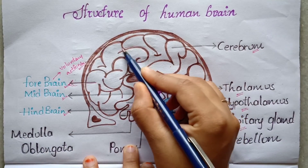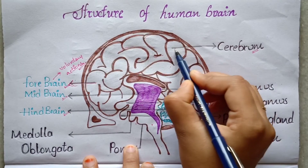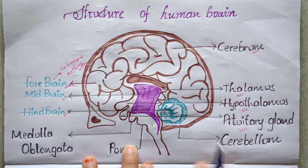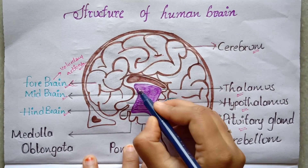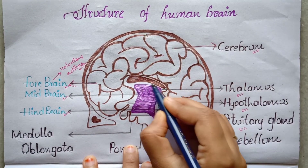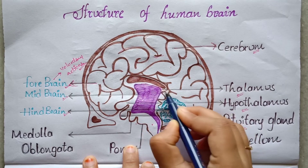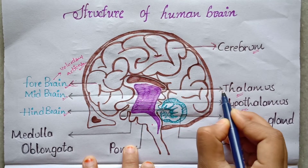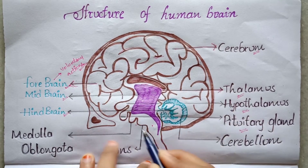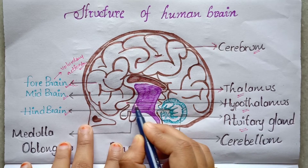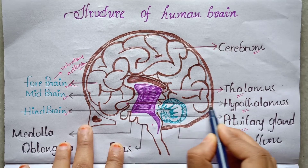This larger section is called the cerebrum. The midbrain section is the upper section, and the thalamus is the lower part. This is the hypothalamus.